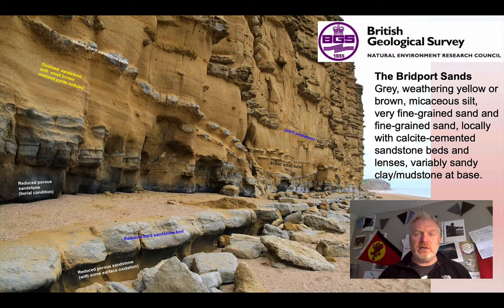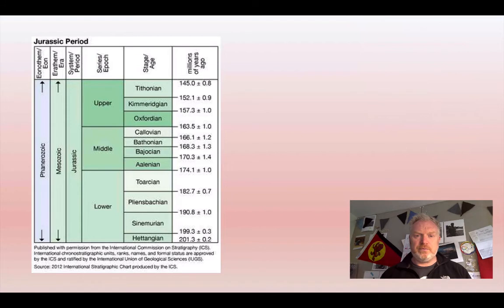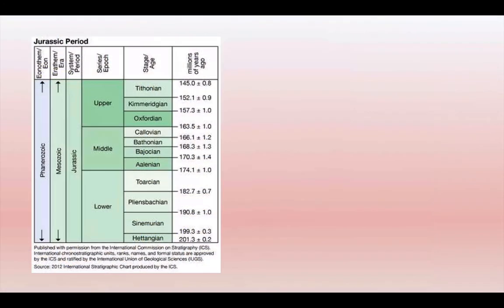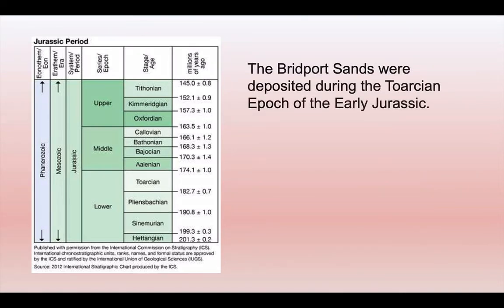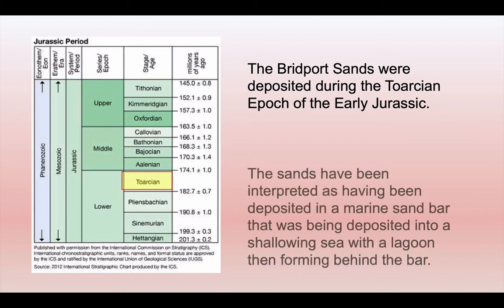Because it's a marine deposit, we're going to find fossils in it, and it's those fossils that give us the key to its age. The Bridport Sands were deposited during the Jurassic period in the Toarcian Epoch, lower down in the Jurassic, and they've been interpreted as having been laid down as a marine sandbar. So you had a sea that was shallowing, with a lagoon behind the sandbar and a deeper sea on the other side.